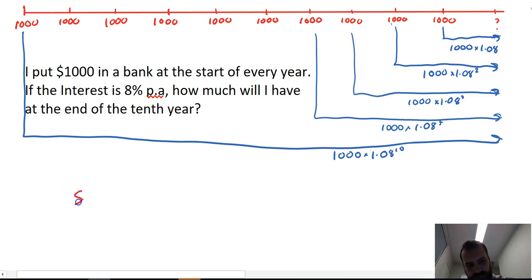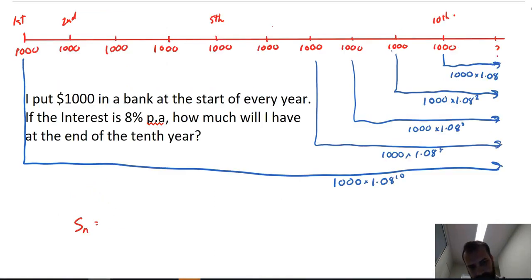So the sum of a geometric series is equal to A, the first term, R to the N minus 1 over R minus 1. Now if we look at what's happening here, I'm just going to add in an extra little thing, and then I'm going to take it away again later.